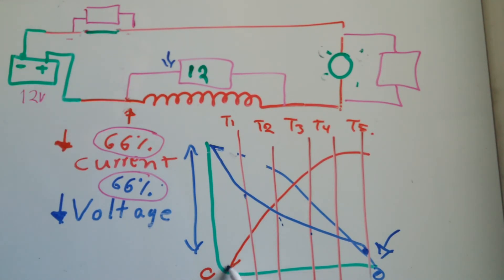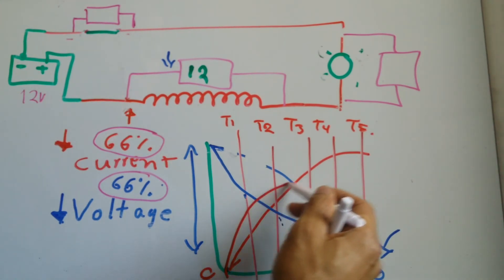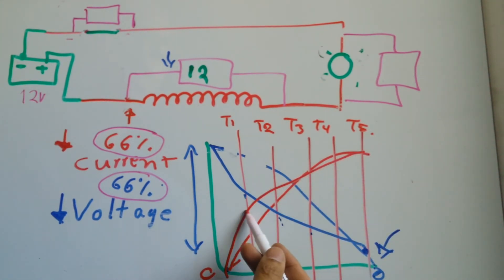Current will also be rising in intervals of 66%. This will be 66% of whatever the total current is going to be, and this is an increase of 66% of whatever is left over.